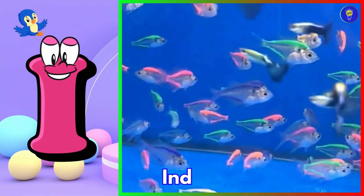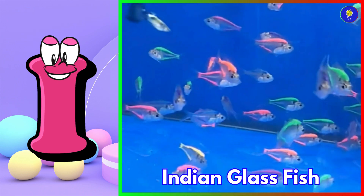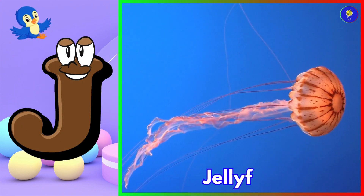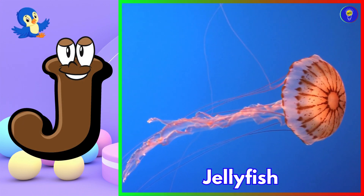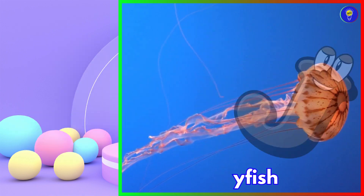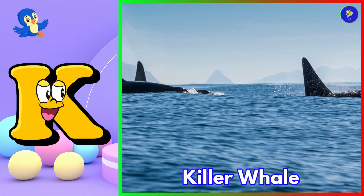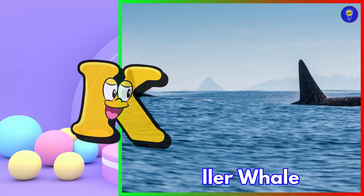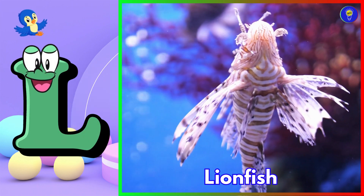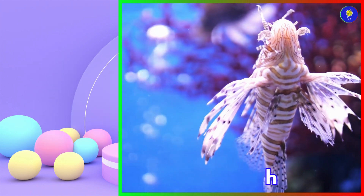I is for Indian glass fish. J is for jellyfish. K is for killer whale. L is for lionfish.